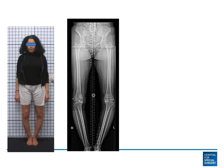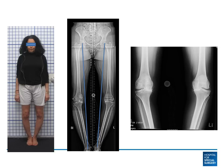Now in a situation where somebody has a bow leg deformity, you can see that the lines from the hip to the ankle are very much deviated from the center of the knee and really fall to the inside part of the knee. That leads to a situation over time where there's overload of the medial or inside joint compartments.